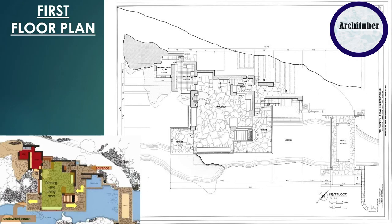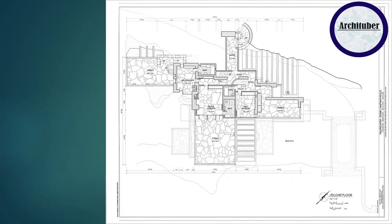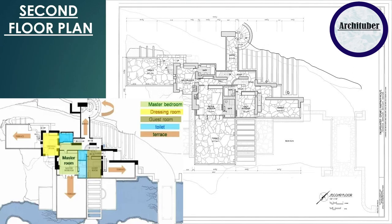Talking about the first floor plan, you can see there is a living room and dining room, a kitchen, and a servant room. There is also an entrance, a staircase, and a terrace which gives the view of the Bear Run River. The plan clearly shows the circulation of the spaces throughout the first floor.